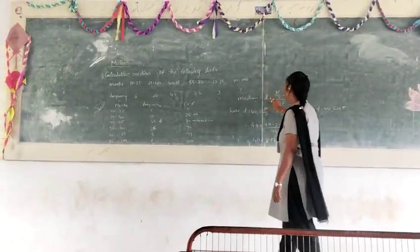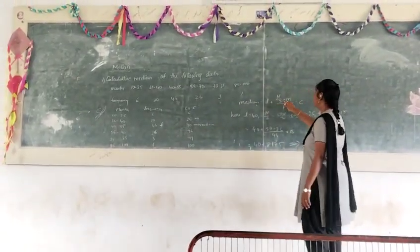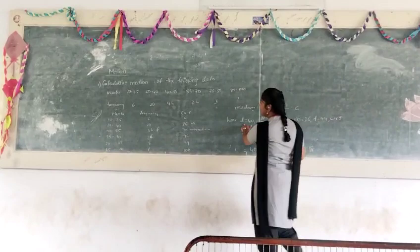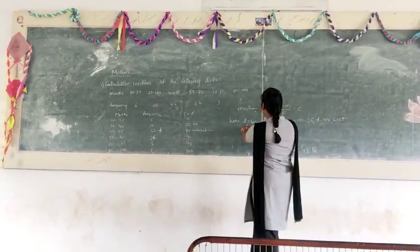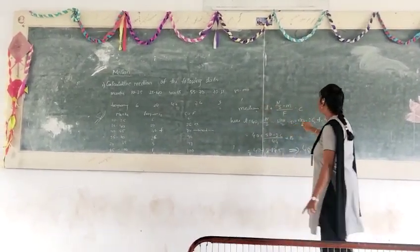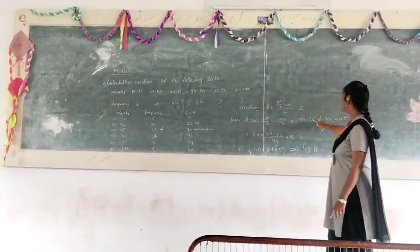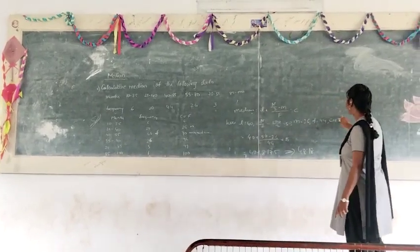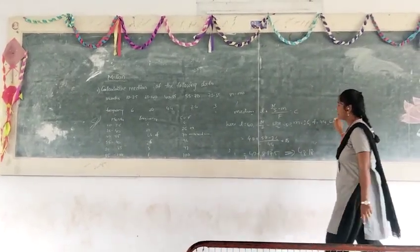Here the formula is L plus n by m into c. Here L is 40 and m by n by 40 is 50. 1,026 frequency 44, you can get to this. Equal to 15.